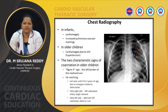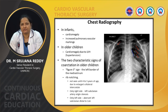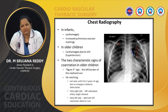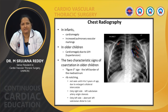If rib notching is present on the right side only, left subclavian artery origin stenosis is likely present. If present on the left side only, there is probably an aberrant left subclavian artery arising distal to the coarctation.